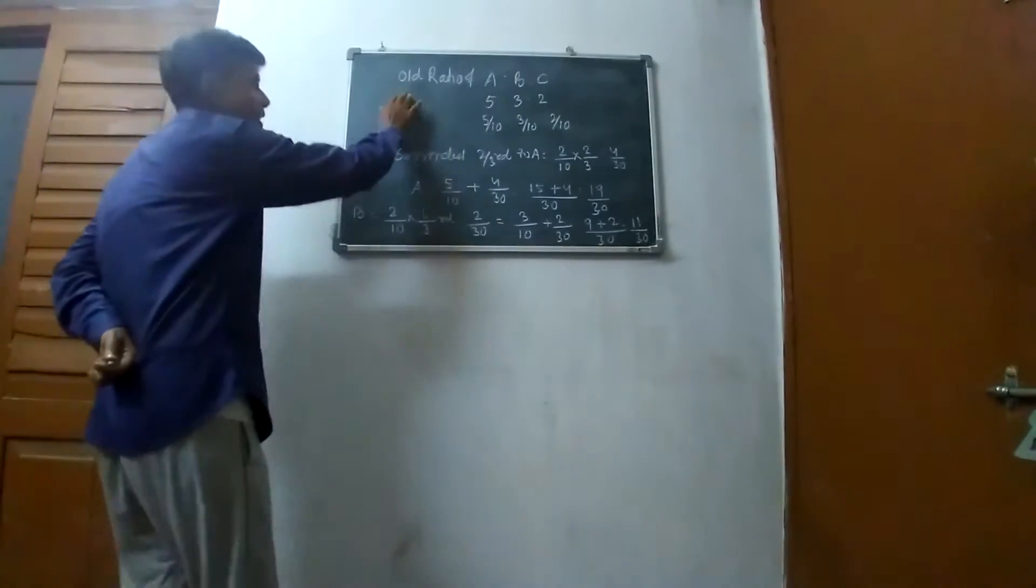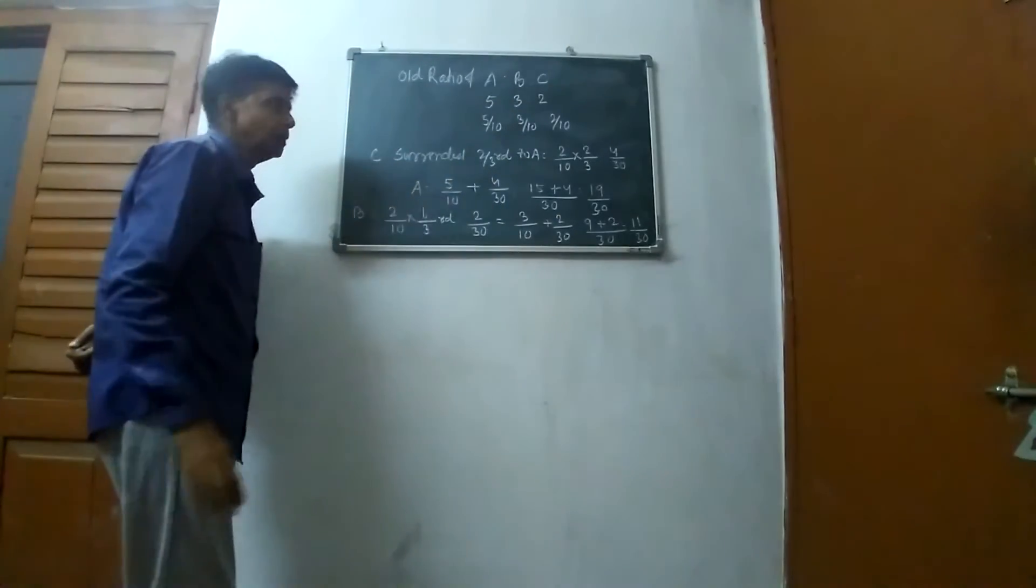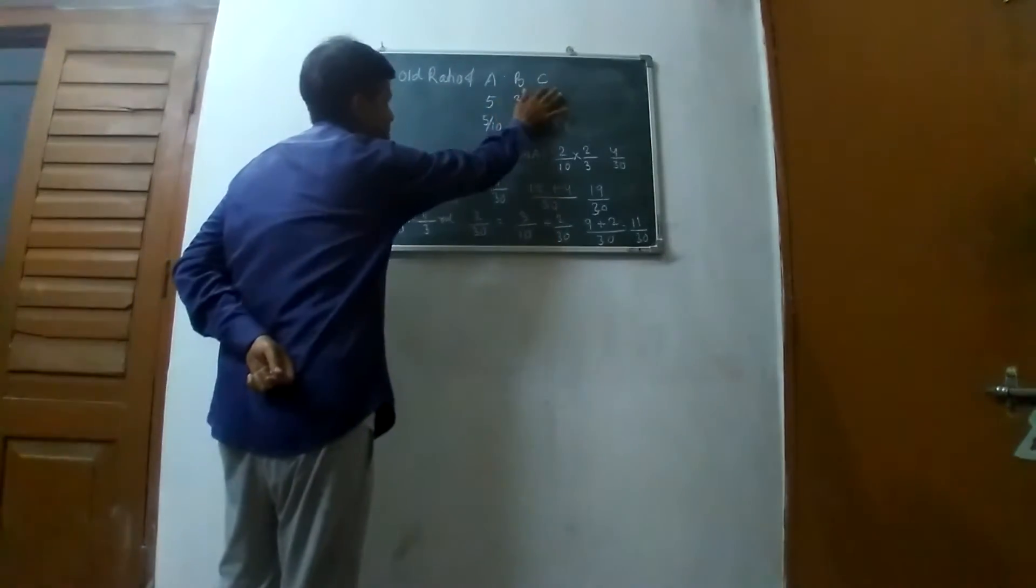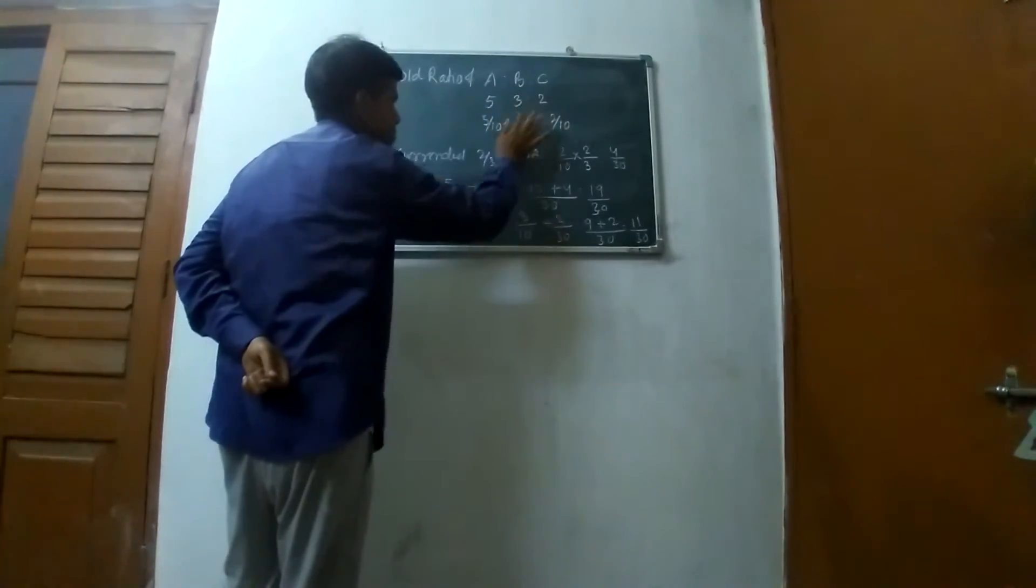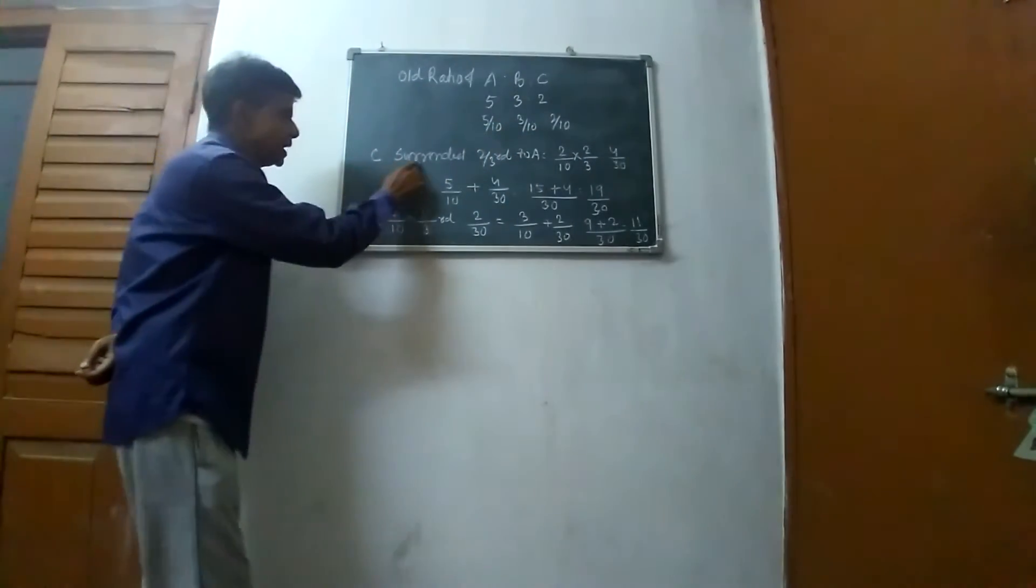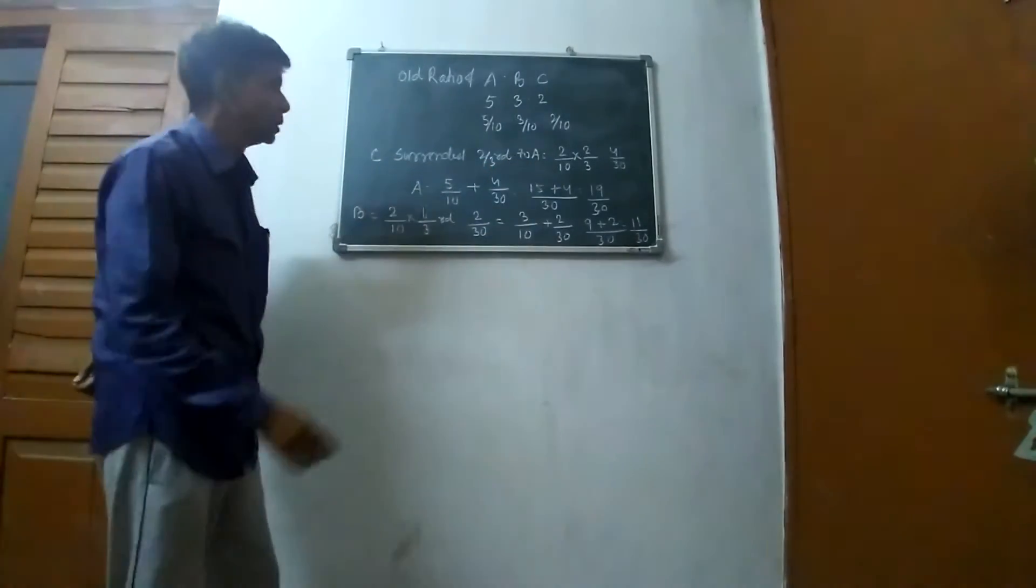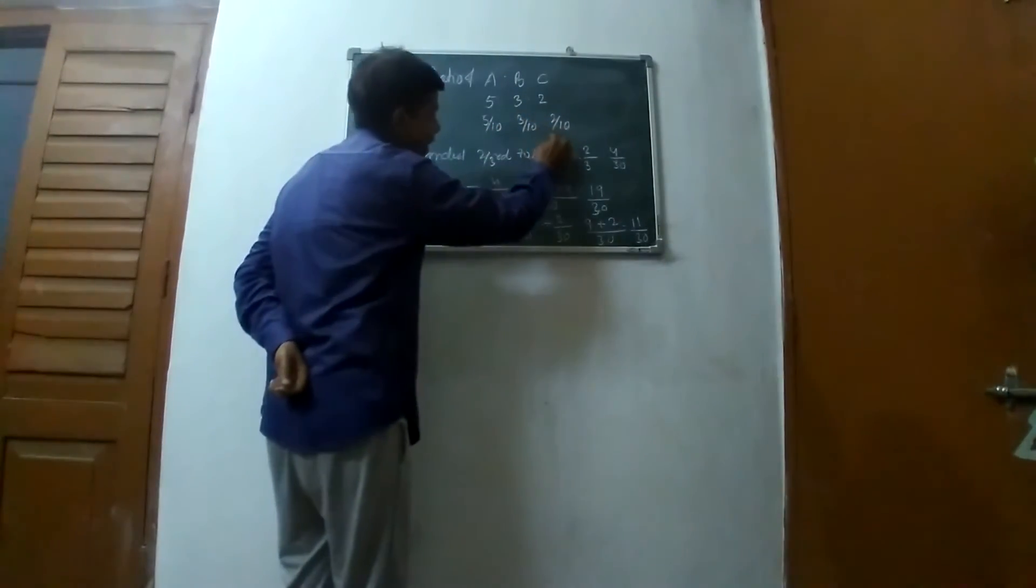The old ratio is A:B:C = 5:3:2. Converting to fractions: 5/10, 3/10, and 2/10. C surrenders his share.